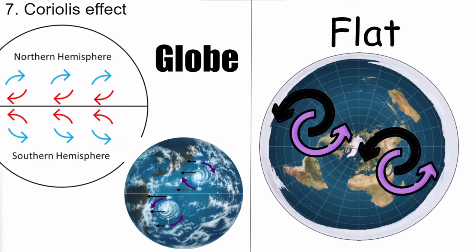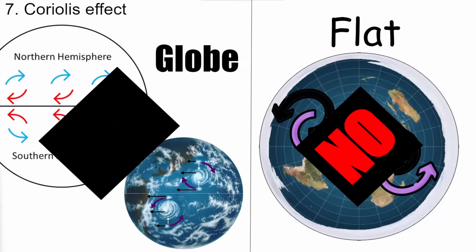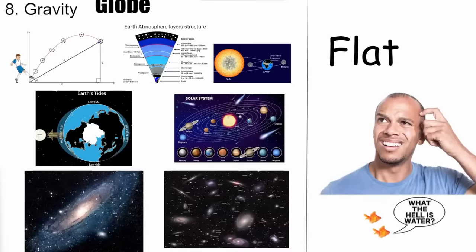The Coriolis effect: on a globe, hurricanes in the northern and southern hemispheres rotate in opposite directions because the equator spins faster than the poles. On a flat model, there would be no directional difference — everything would turn in the same direction. We observe the globe's Coriolis effect in reality — hurricanes rotate oppositely in the two hemispheres.